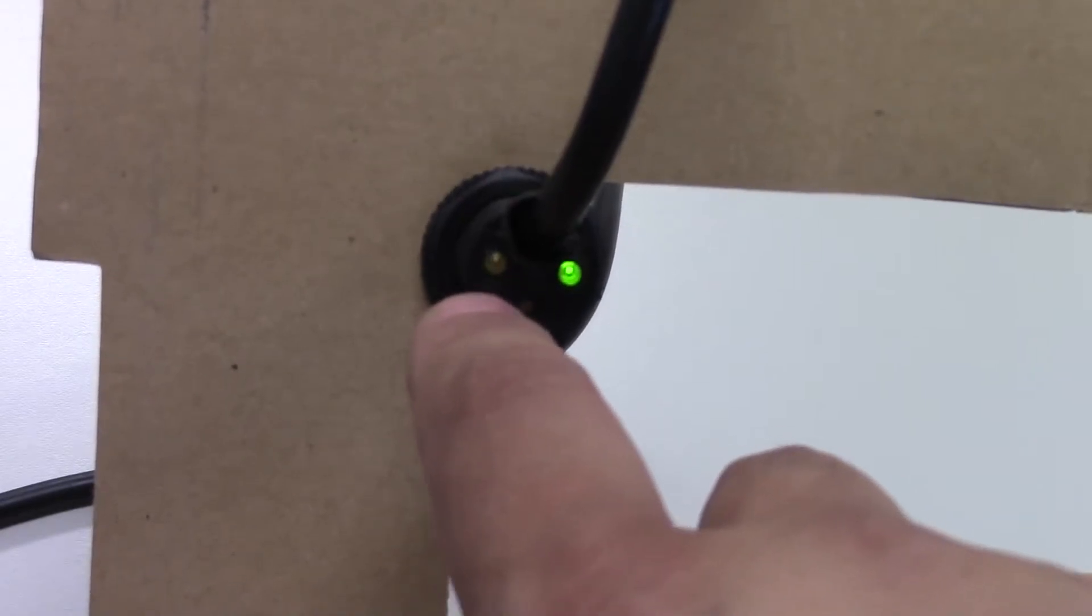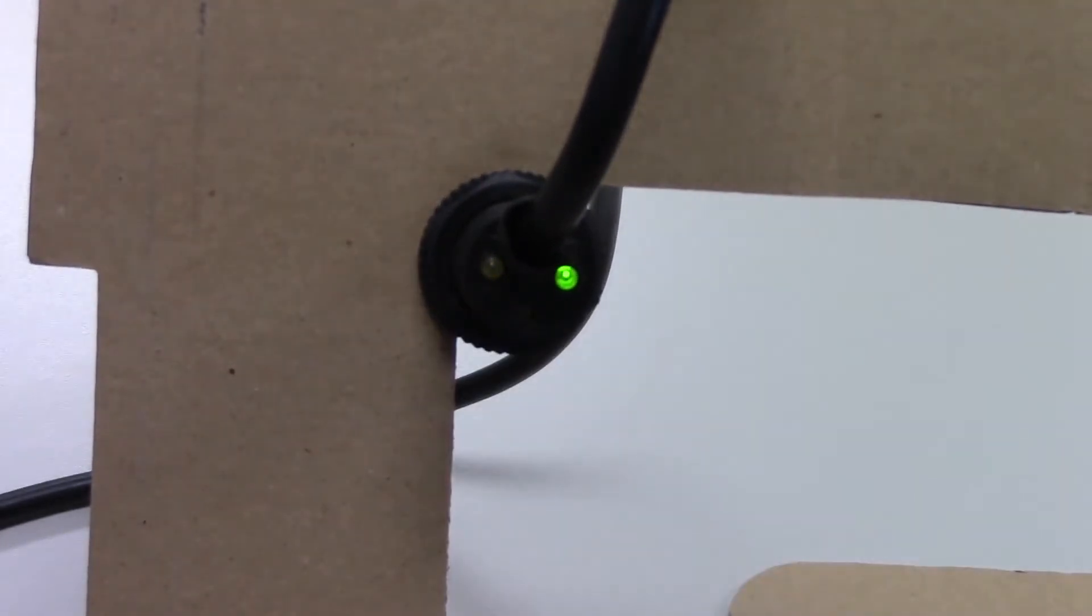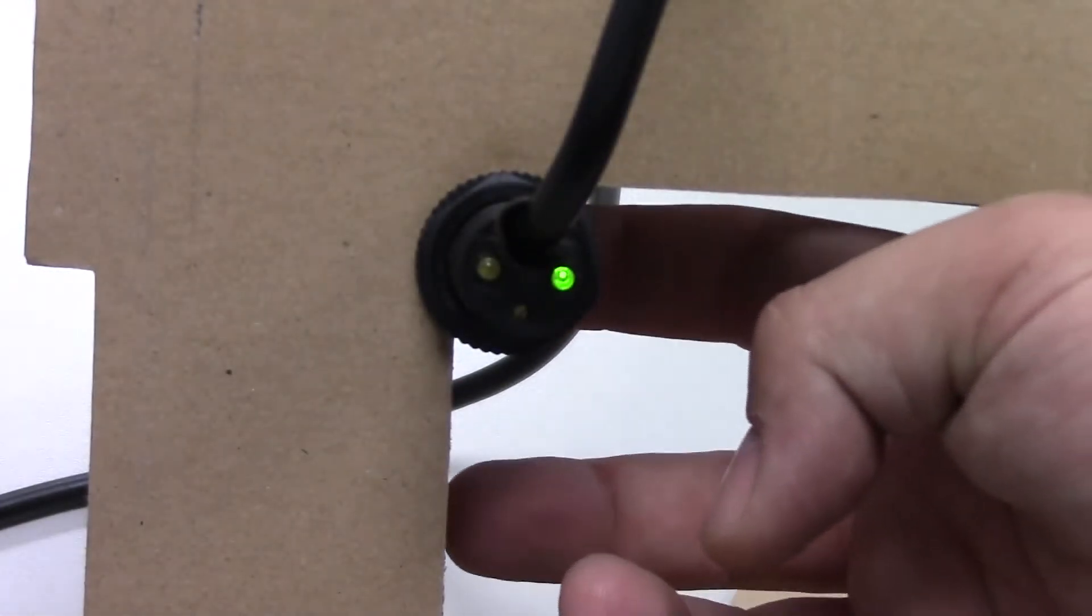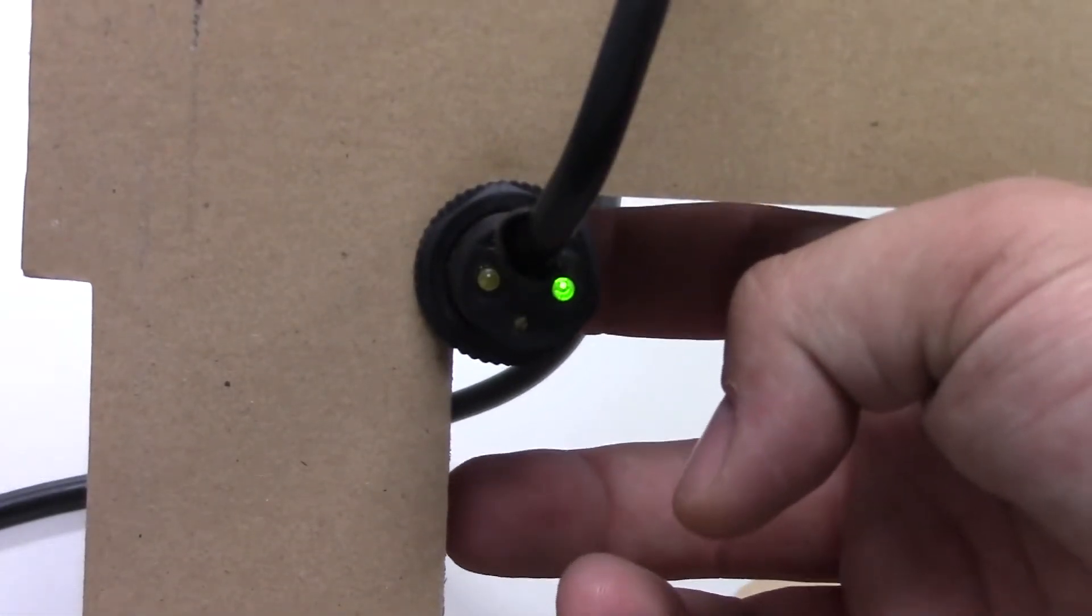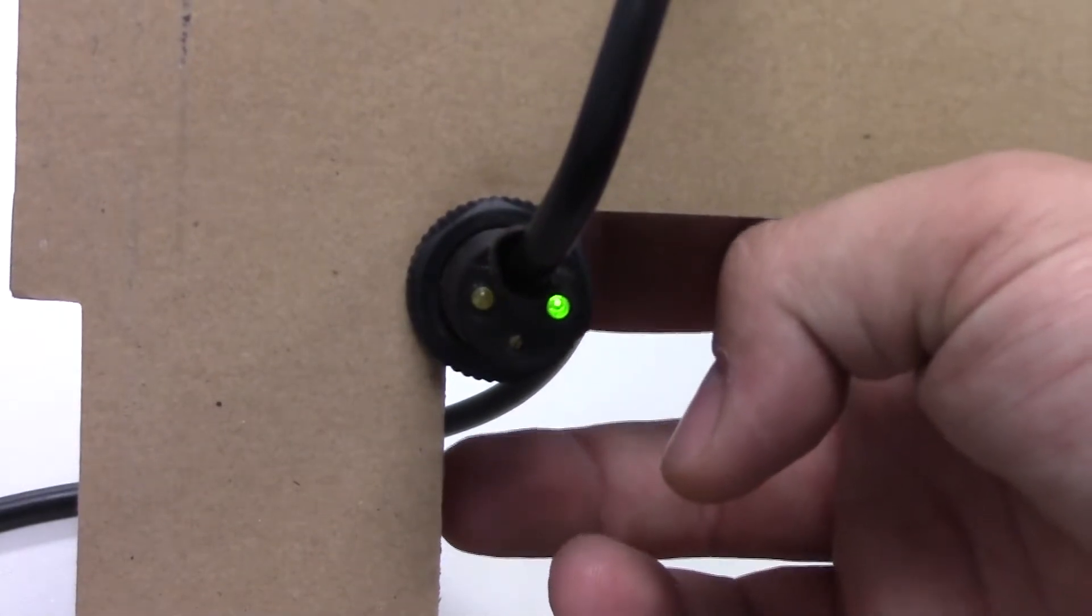This light over here that is not lit is the detection light. When something is in front of the sensor it will turn amber to let the system know that there is something in front of it.